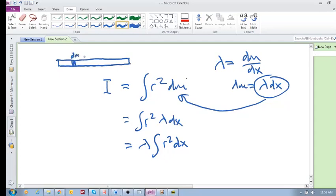from x equals 0 all the way to the length of the rod, as you're moving from left to right and adding up all these little inertial segments,